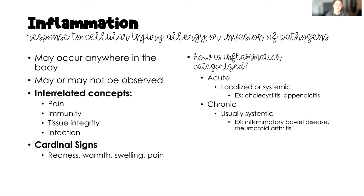Inflammation can occur anywhere in the body and it may or may not be observable. If it's on the exterior of the body we can see signs of inflammation, but if it's internal — such as cholecystitis or appendicitis — we might not necessarily see it and may have to use other assessment techniques. The cardinal signs of inflammation are redness, warmth, swelling, and pain or tenderness.